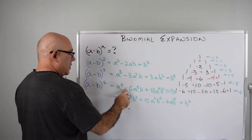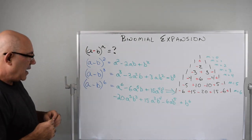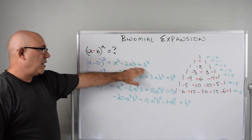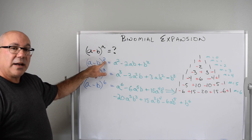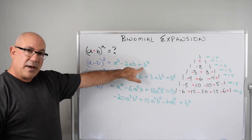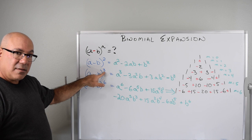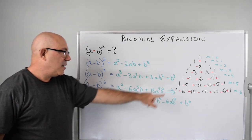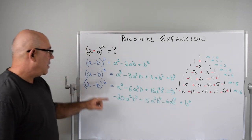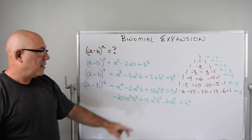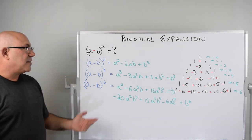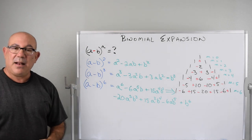Let's talk about the two tricks. First, you know you got it right when you have n plus one terms in your answer. Second, if n is even the last term is positive; if n is odd the last term is negative. You can see: even n gives a positive last term, odd n gives a negative last term — for example, n equals five also ends negative.